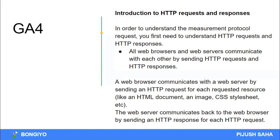In order to understand the measurement protocol request, you first need to understand HTTP requests and HTTP responses. All web browsers and web servers communicate with each other by sending HTTP requests and HTTP responses. A web browser sends an HTTP request for each requested resource like an HTML document, image, or CSS stylesheet, and the web server communicates back by sending an HTTP response for each request.